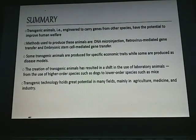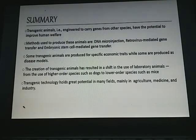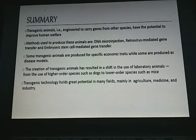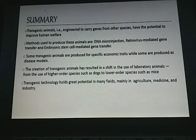In summary, transgenic animals engineered to carry genes from other species have the potential to improve human welfare. Methods used to produce them are DNA micro injection, retrovirus-mediated gene transfer, and embryonic stem cell-mediated gene transfer. Some transgenic animals are produced for specific economic traits, while others are used as disease models. Transgenic technology holds great potential in agriculture, medicine, and industry, and has shifted laboratory animal use from higher-order species like dogs to lower-order species such as mice.